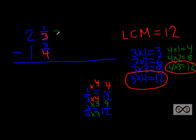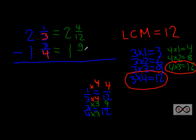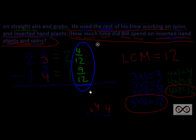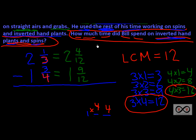We can rewrite: two and one-third is equal to two and four-twelfths, and one and three-fourths is equal to one and nine-twelfths. Now can we subtract? We have four-twelfths minus nine-twelfths — we can't subtract nine-twelfths from four-twelfths. We have to do a little regrouping here.